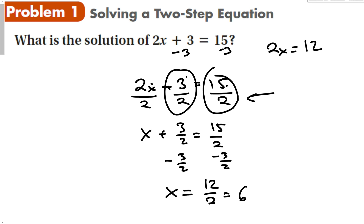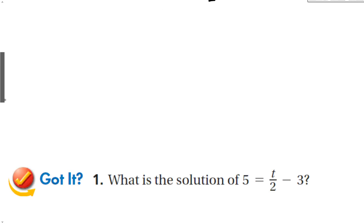When you see a two-step equation, the first thing you want to do is find the variable and go order of operations backwards: add or subtract something to both sides first, and then multiply or divide by something else on both sides.